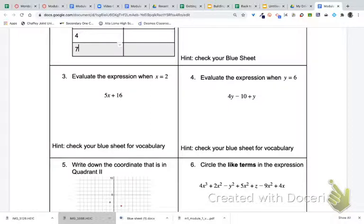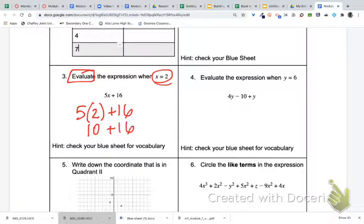For number three, we are trying to evaluate, so we're trying to figure out a conclusion, and there is no equal sign, so we're not trying to solve for x. We actually know what x is in this case. So what we'll do is substitute a 2 in every time we see an x. So we're taking 5 times 2 plus 16. 5 times 2 is 10. 10 plus 16 should give me 26.